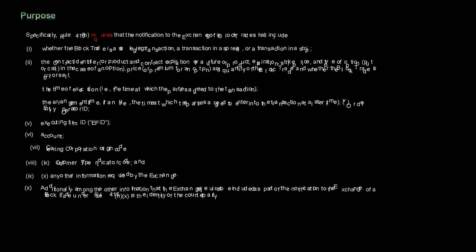Specifically, Rule 415(h) requires that the notification to the exchange of a block trade shall include: number one, whether the block trade is a single-leg transaction, a transaction in a spread, or a transaction in a strip; number two, the contract identifier or product and contract expiration for a future, or product expiration, strike price, and type of option — put or call — in the case of an option, also the price and quantity of the block trade and whether it is a buy or sell; number three, the time of execution; number four, the arrangement time; number five, the executing firm ID or EFID.